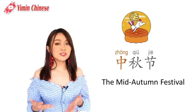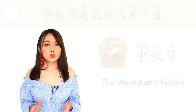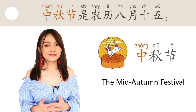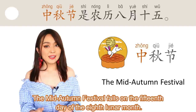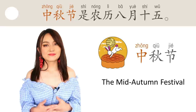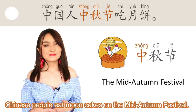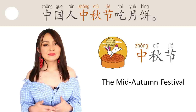And next one: 中秋节, the Mid-Autumn Festival — a very important traditional Chinese festival. 中秋节是农历八月十五。 The Mid-Autumn Festival falls on the 15th day of the 8th lunar month. 中国人中秋节吃月饼。 Chinese people eat mooncakes on the Mid-Autumn Festival.